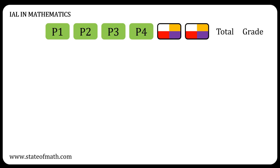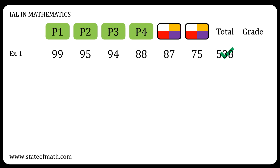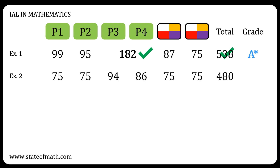Let me go over some examples. In example one, the total UMS is more than 480, so the A condition is satisfied. The total for P3 and P4 is more than 180, so the star condition is satisfied as well, and an A-star is awarded. In example two, the total UMS is exactly 480 and the total of P3 and P4 is exactly 180, so again an A-star is awarded.